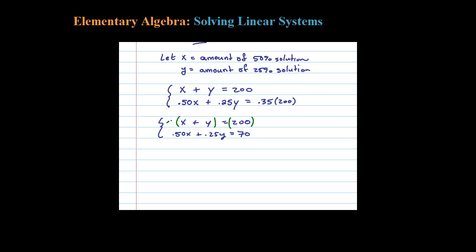Now let's use the elimination method and multiply both sides of the top equation by negative 0.25. That gives us the equivalent first equation: negative 0.25X minus 0.25Y equals negative 50, since 200 times 0.25 is 50.